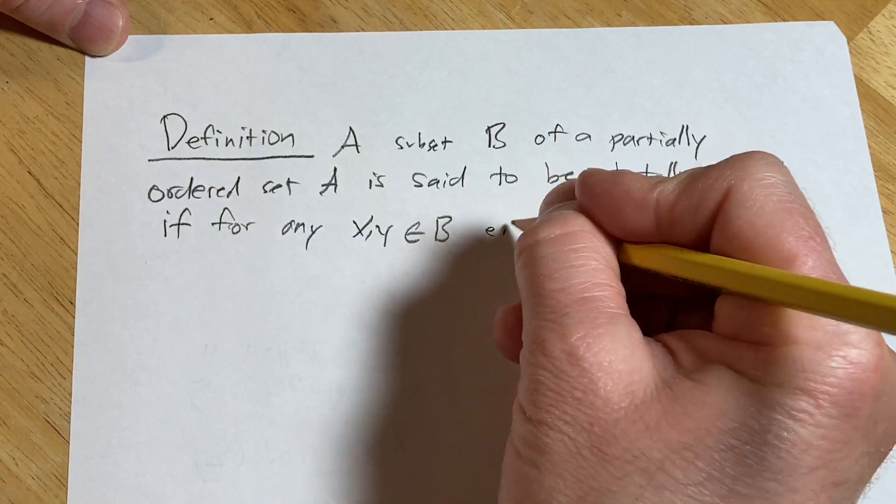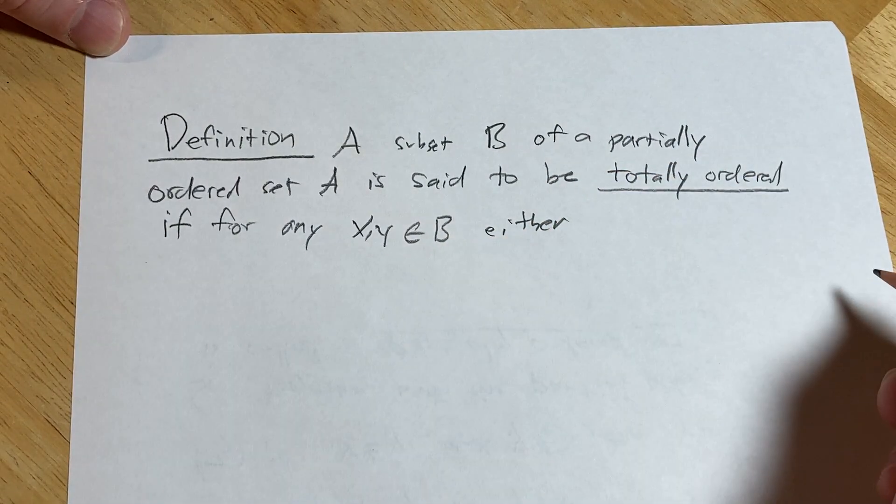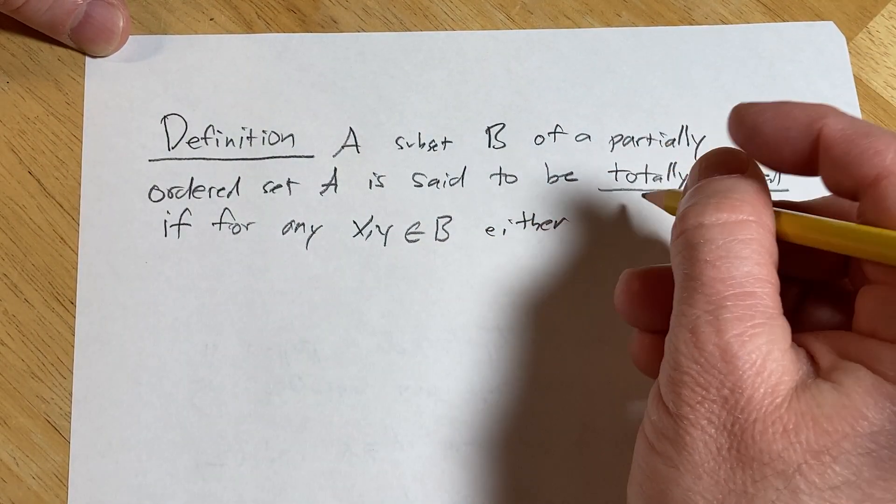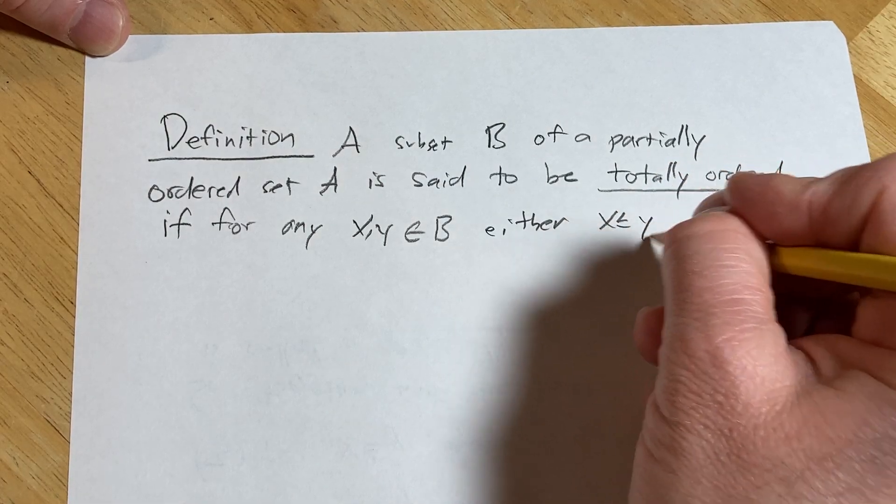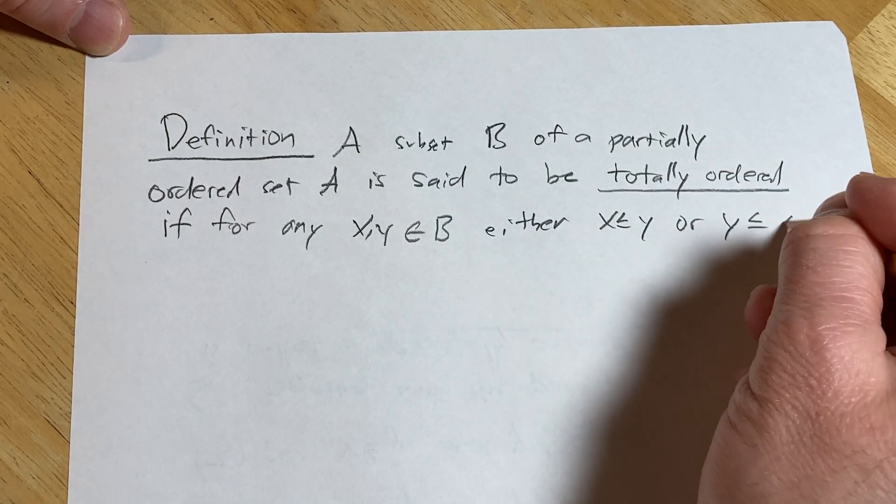either we have one of the two situations: we have x less than or equal to y or y less than or equal to x.